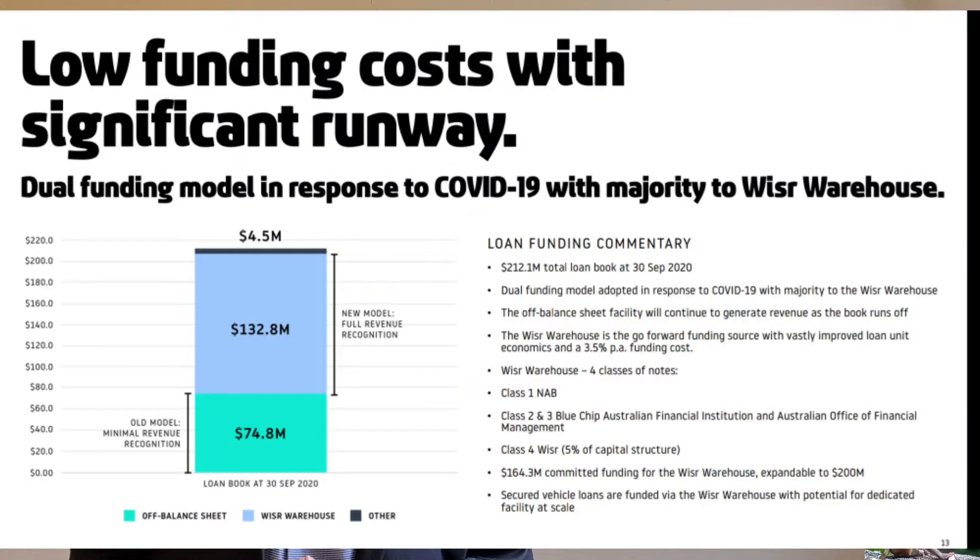So for most lending companies, the growth in revenue should be similar to the growth in loan origination. But in the case of Weiser, they previously used off-balance sheet funding model where the loans they originated were not really their loans and they did not take on the credit risk. Therefore, they only collected a small management fee. Now that they have started to take on credit risk, their revenue has become around three times of what they earned when they didn't take on the credit risk.